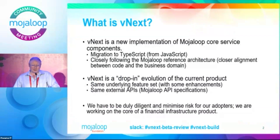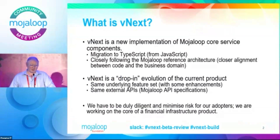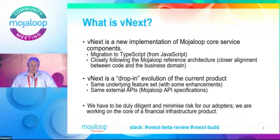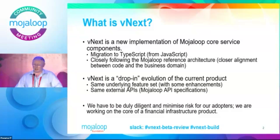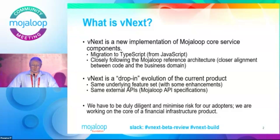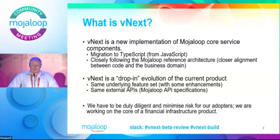Lots of you in the room will have already heard of vNext, but I imagine there's a significant number of people here who don't know what vNext is. So I'm going to start by giving you a brief introduction. vNext is a completely new implementation of MojoLoop Core Service Components. It represents a migration from JavaScript to TypeScript, and it closely follows the MojoLoop reference architecture, which was a project that spun out some years ago to map the business domain of what MojoLoop does. Having a close alignment between the business domain and your software implementation has a lot of benefits.